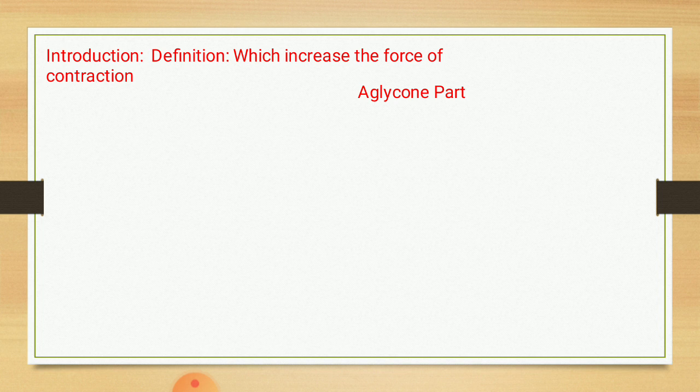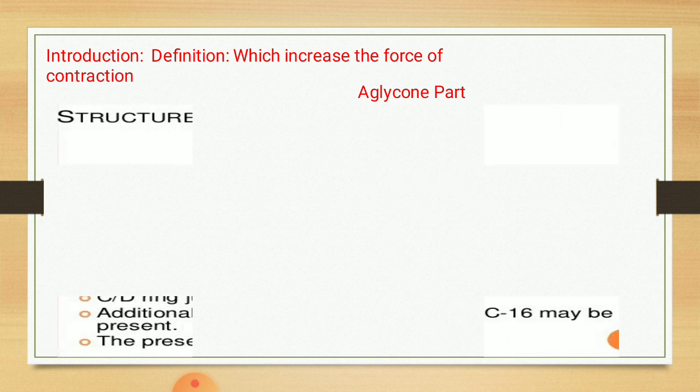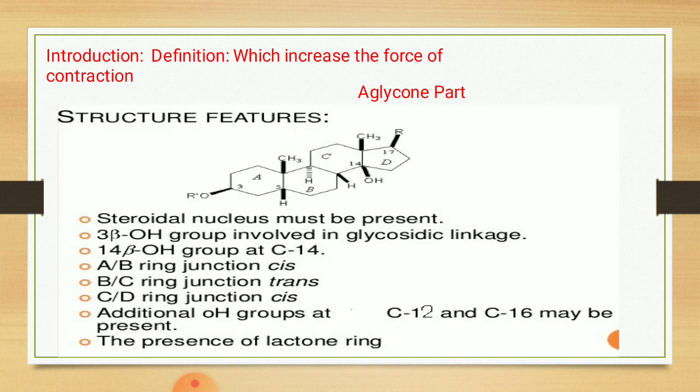If you see the chemistry of cardiac glycoside, the basic structural features: it consists of two parts, that is the sugar part and the non-sugar part. The non-sugar part is called the aglycone part. This aglycone part of cardiac glycoside contains a steroidal nucleus with a unique set of fused rings. There are four rings: ring A, ring B, ring C, and ring D.